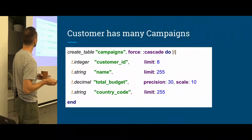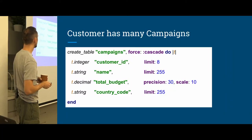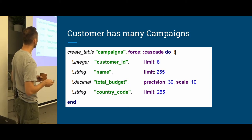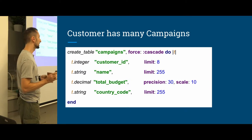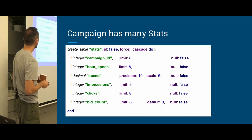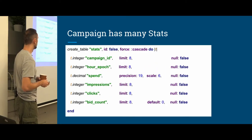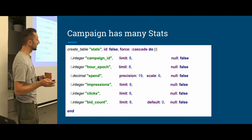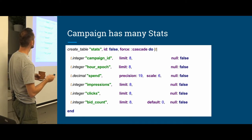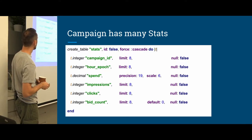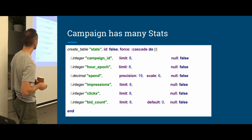If our bid won, then we track the impression — the actual fact that our ad was displayed somewhere. And if we're lucky, we also track if someone actually clicked on our ad. So let's jump to the database schema. We have campaigns which belong to a customer — they have a name, total budget, and country code. It's a very simplified version. And this is the core table we'll be looking at today. Each stat is just one row where you have information about what happened to your advertising campaign. It has a campaign ID, and our epoch, which I'll explain in the next slide.